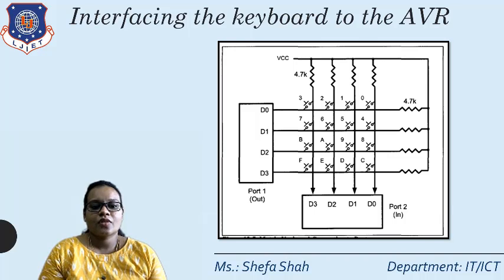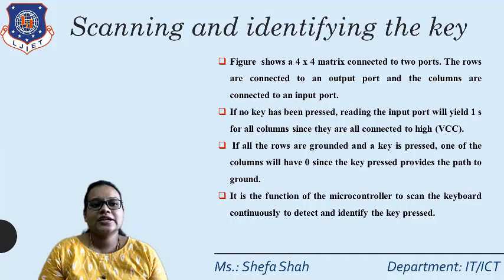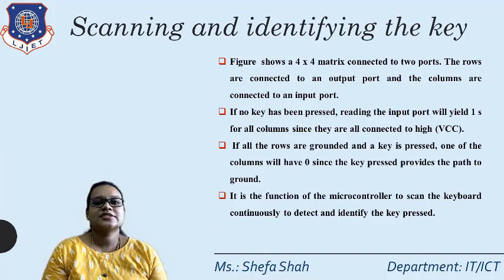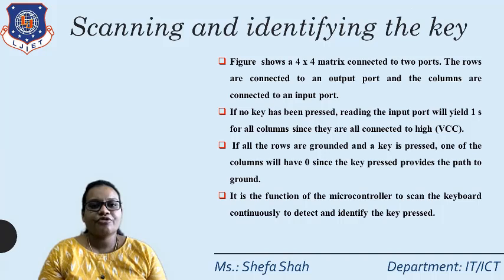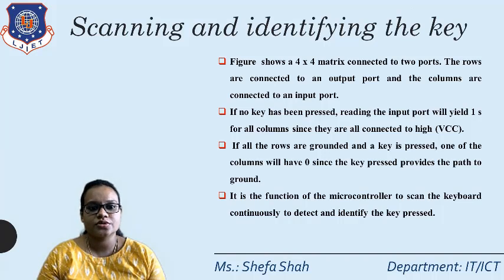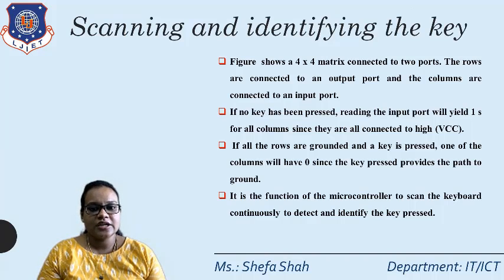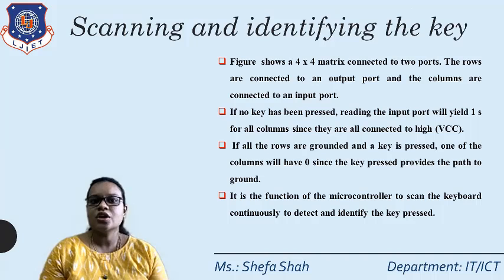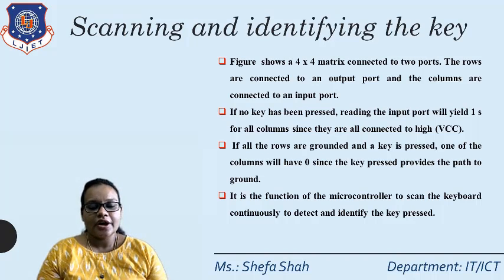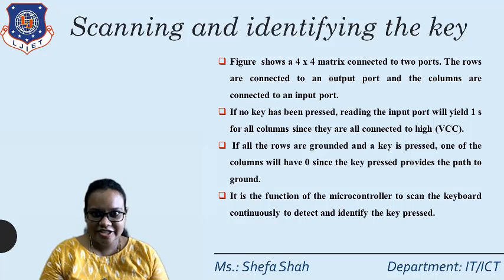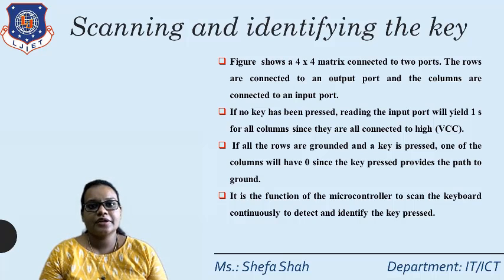The AVR identifies keys based on scanning and identifying. As seen in the previous figure, a 4x4 matrix is connected to two ports — rows connected to an output port and columns connected to an input port. If no key has been pressed, reading the input yields all ones, since by default the input word equals 1. All columns are connected to high VCC.